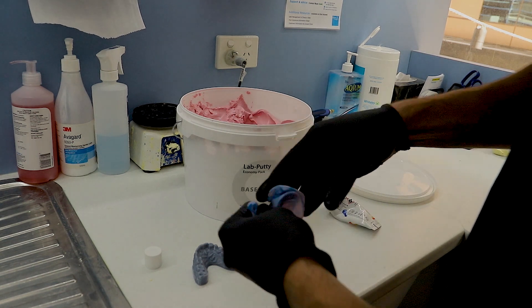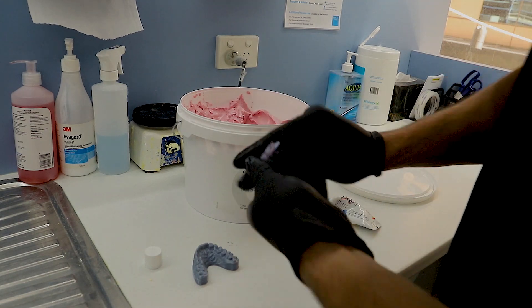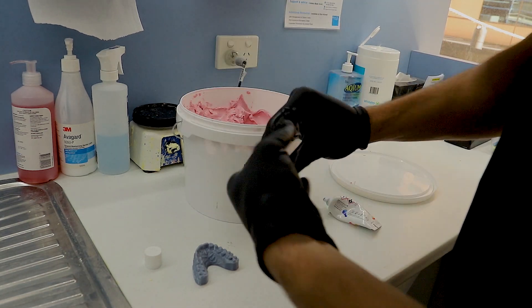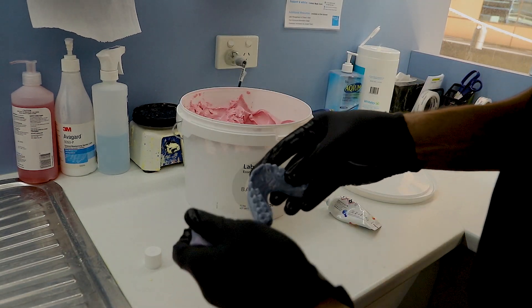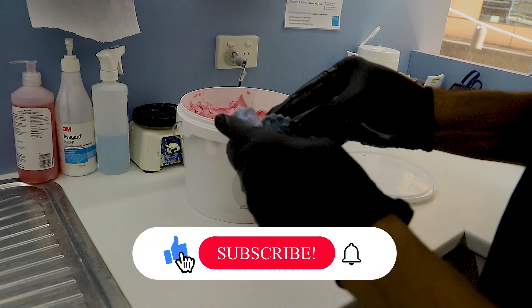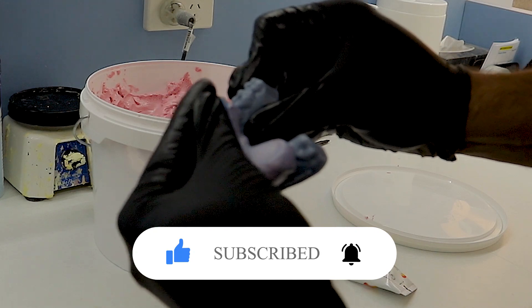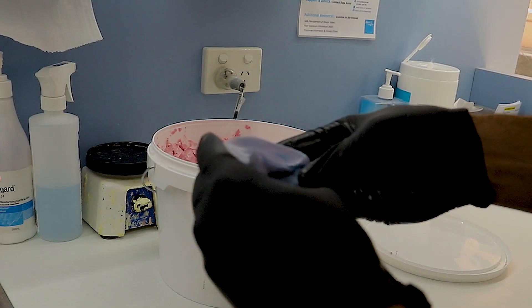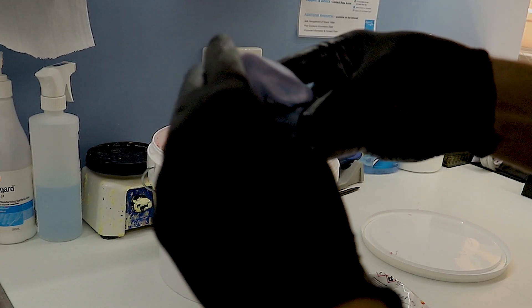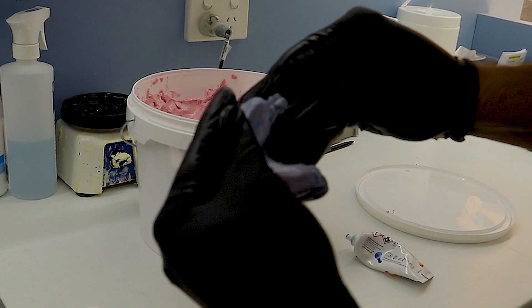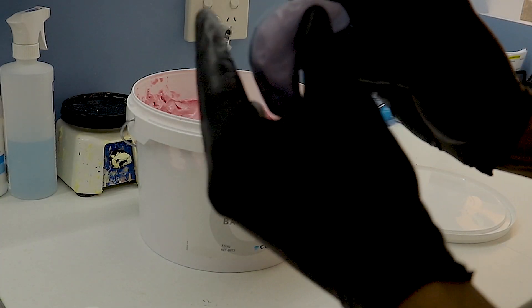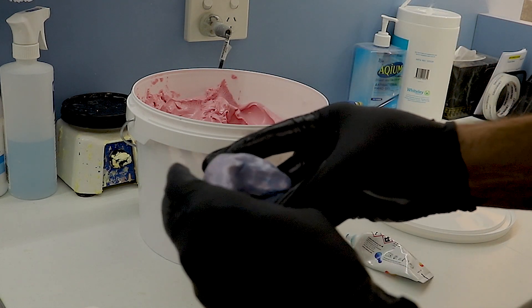I use gloves because this one gets quite messy. And then we're going to mold it over the top of the teeth. Make sure that it is thick enough that it is nice and robust. You don't want it too thin because then it's a bit too flexible. You want it to be nice and solid so it holds its shape really well.